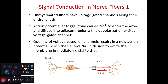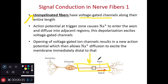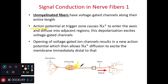Let's review briefly. We can have unmyelinated fibers. These unmyelinated fibers are going to have voltage-gated channels along the entire length of the fiber. There are no Schwann cells or oligodendrocytes myelinating this axon. Once the action potential is initiated at the trigger zone, we're going to have sodium rushing into the axon, diffusing to adjacent regions, and initiating that all-or-nothing cascade of an action potential which travels the length of the axon.